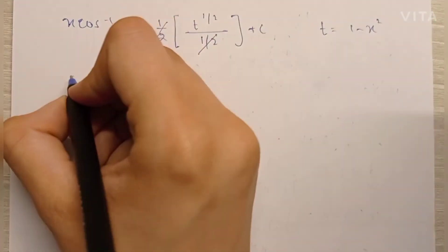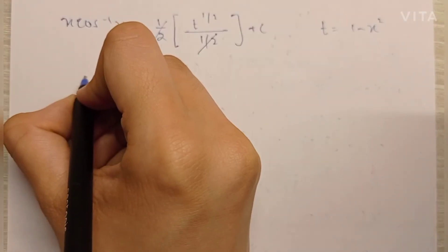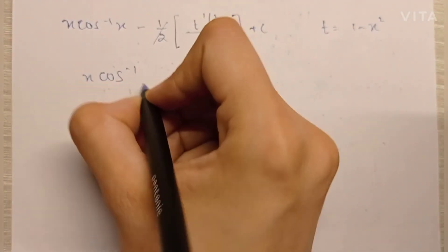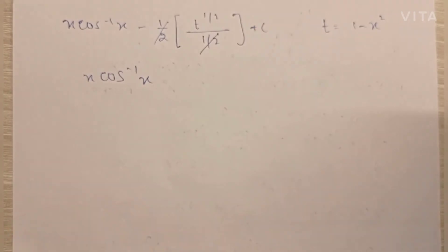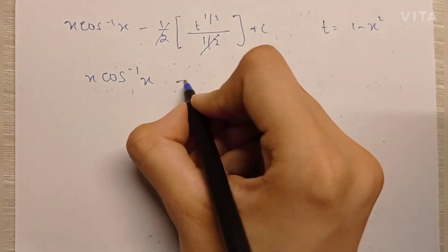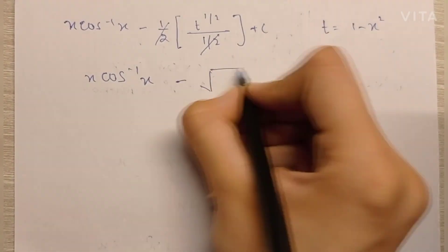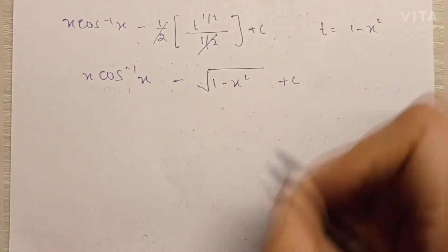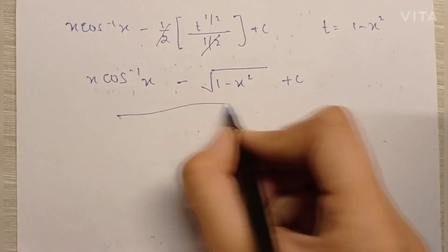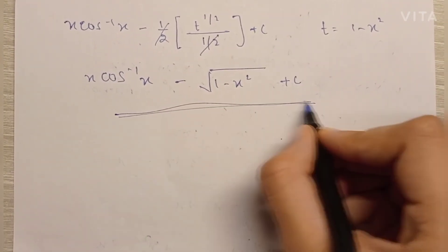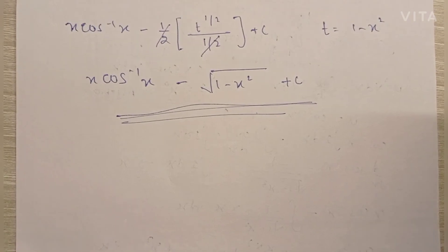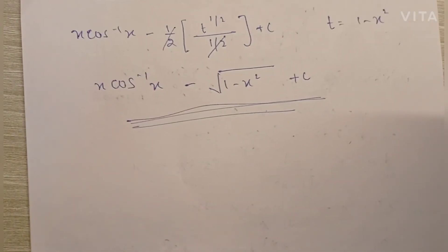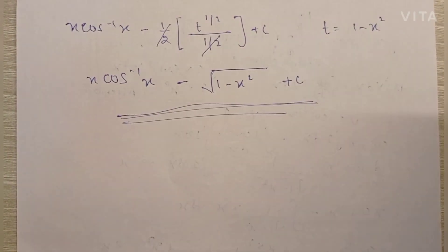Since t was 1 minus x squared, we can substitute back to get the final answer: x cos inverse x minus root of 1 minus x squared, plus C. And that's the final answer! That's it for today, guys — thank you so much for watching, I'll see you in the next video. Bye!